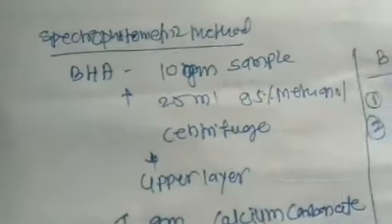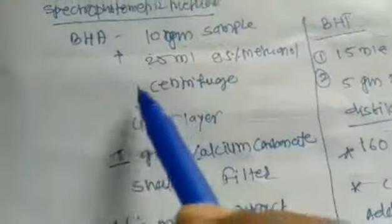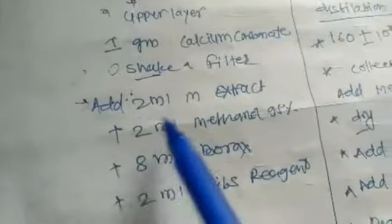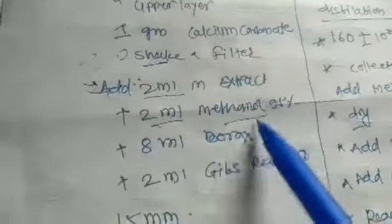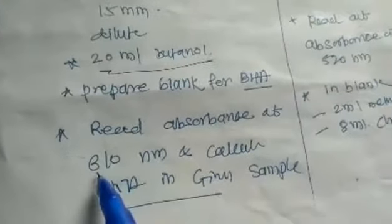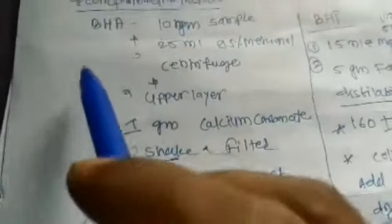The second method is the spectrophotometric method. For estimation of BHA, take 10 grams of sample in 25 ml methanol, centrifuge, take the upper layer, add 1 gram of calcium carbonate, shake, and filter. Then take 2 ml of the extract, add 2 ml methanol, 8 ml borax, 2 ml Gibbs reagent, and 20 ml butanol. Record the absorbance at 690 nm.